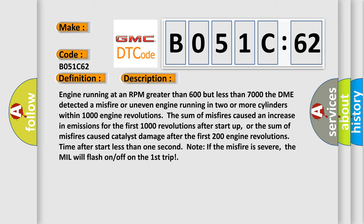Engine running at an RPM greater than 600 but less than 7,000. The DME detected a misfire or uneven engine running in two or more cylinders within 1,000 engine revolutions. The sum of misfires caused an increase in emissions for the first 1,000 revolutions after startup, or the sum of misfires caused catalyst damage after the first 200 engine revolutions. Time after start less than one second. Note: If the misfire is severe, the MIL will flash on/off on the first trip.